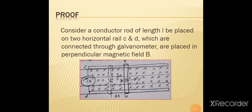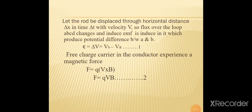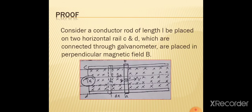اس کی mathematical form کے لیے: let the rod be displaced through horizontal distance Δx in time Δt with velocity v. So the flux over the loop a-b-c-d changes and an induced EMF is produced. یہاں پہ rod کو a-b position سے Δx کے through آگے displace کیا جاتا ہے، جس سے loop a-b-c-d کا flux change ہو جاتا ہے۔